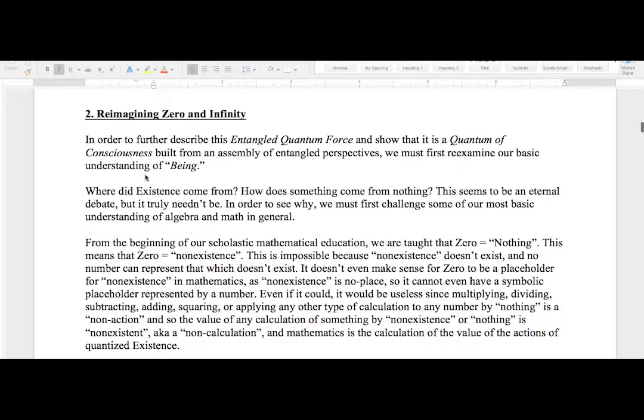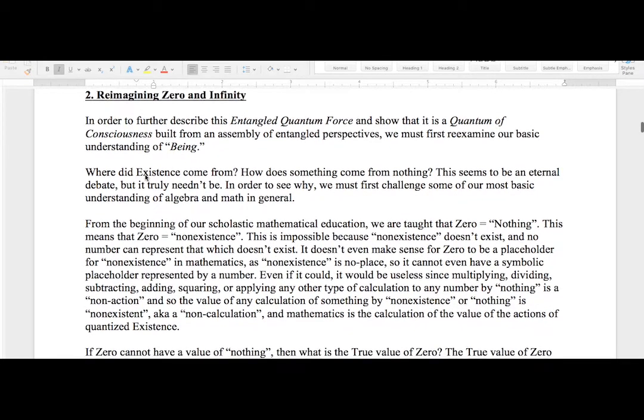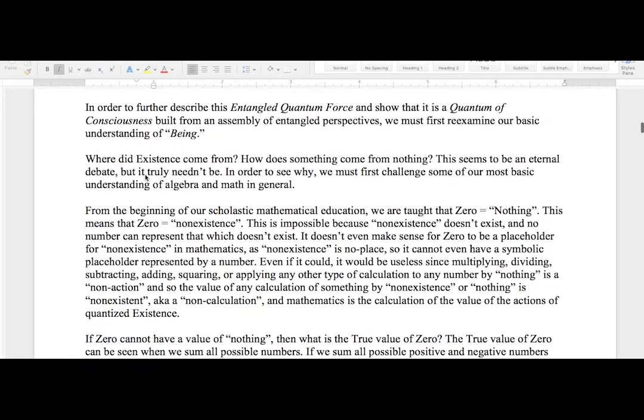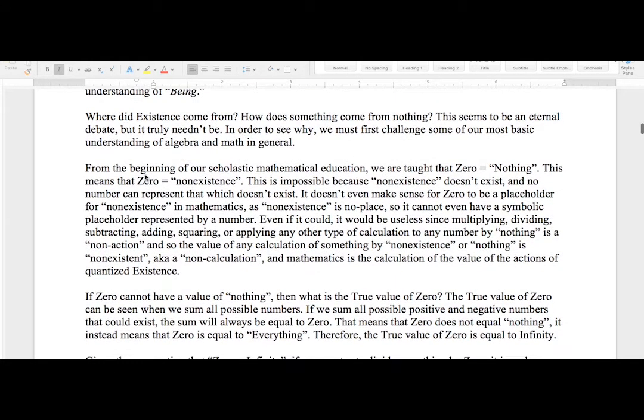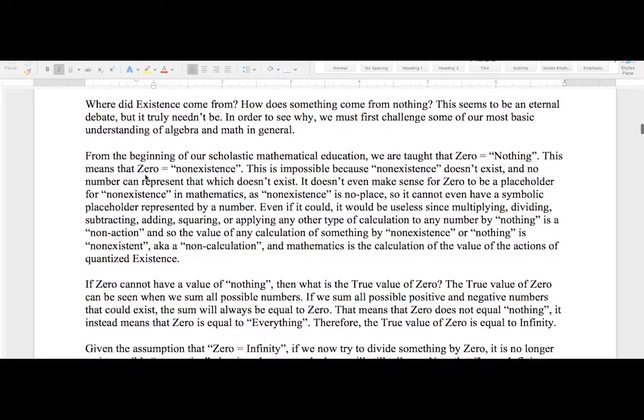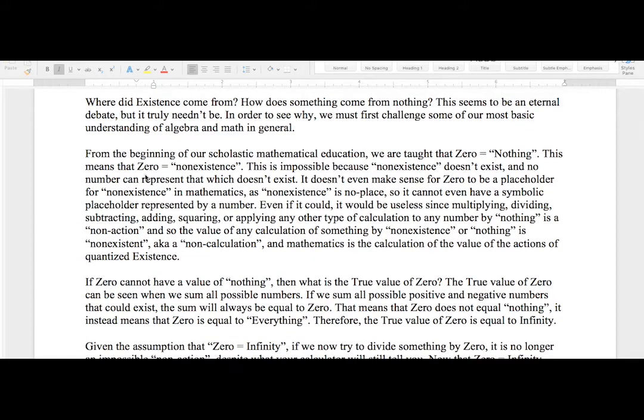This paper is titled Reimagining Zero and Infinity. In order to further describe this entangled quantum force and show that it is a quantum of consciousness built on an assembly of entangled perspectives, we must first reaffirm our basic understanding of being. Where did existence come from? How does something come from nothing? This seems to be an eternal debate, but it truly needn't be.